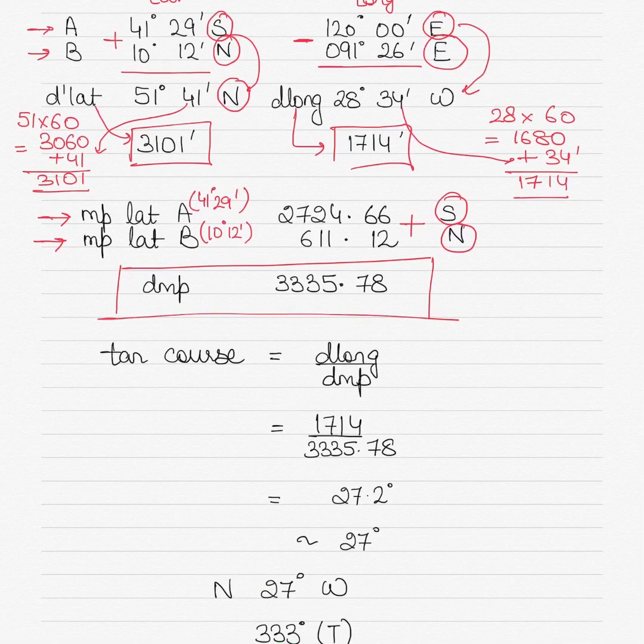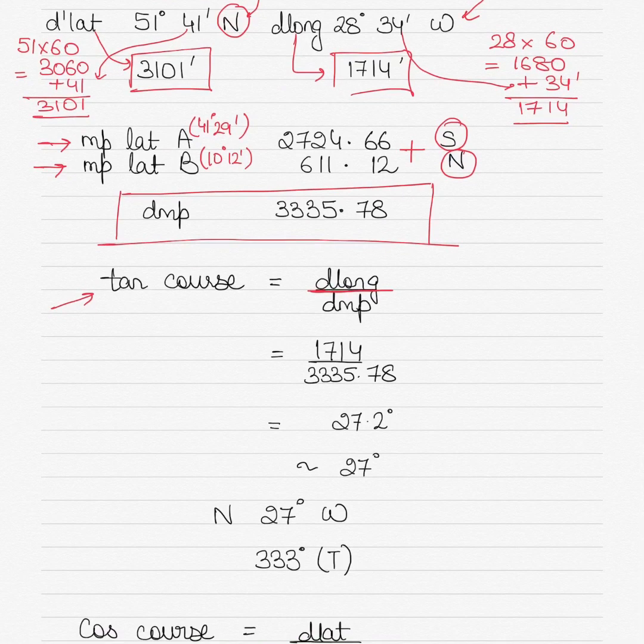Once you get the DLAT, DLONG, and DMP, it's simply a matter of putting them in the formula. The formula is tan course equals DLONG divided by DMP. Use the minutes value. Do not use the degrees. You use degrees only if there is a sine, cos, tan, or cosecant, secant, and cotangent preceding it. So put the DLONG value from above, 1714, and the DMP value, 3335.78.